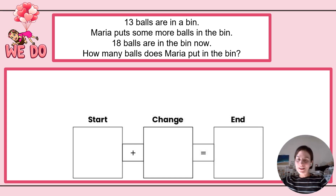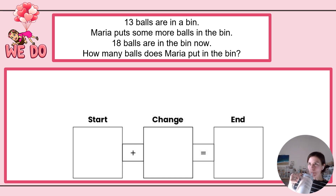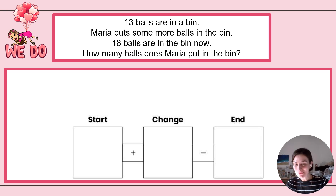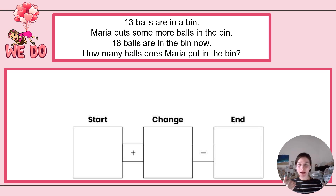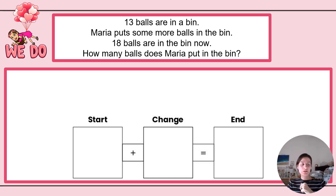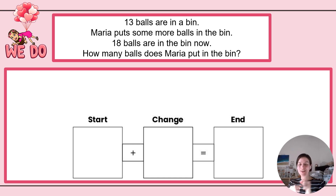All right, friends. You can pause this video and take a brain break. When you're ready, come back. We are going to practice we-do time. I want you to come back with something to write on and something to write with — could be a dry-erase board and marker, or loose paper and pencil. Go ahead and make sure you have your materials ready, then press play when you are ready to go.